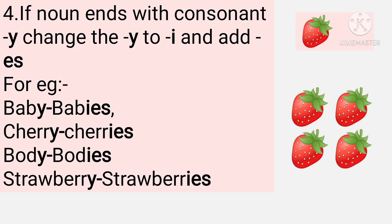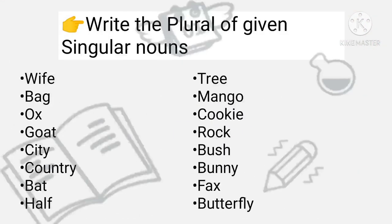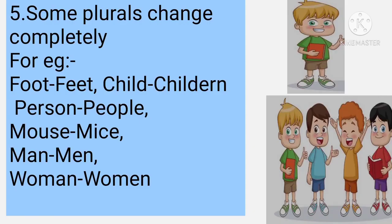Now students, pause your video and write the plural of the given singular nouns: wife, bag, ox, god, city, country, bat, half — and on the next line: tree, mango, cookie, rock, bush, bunny, fox, butterfly. I hope you have written the answers. Now we move on.